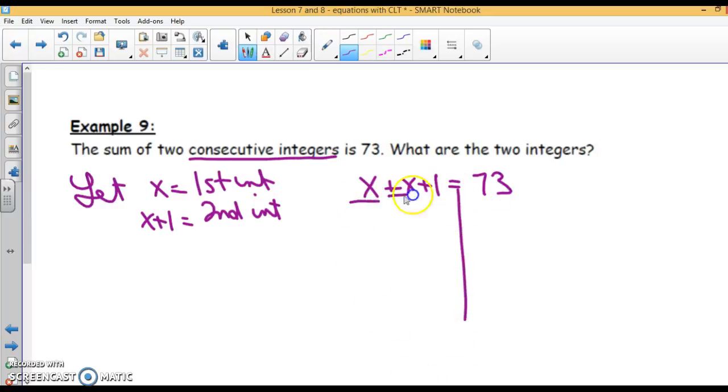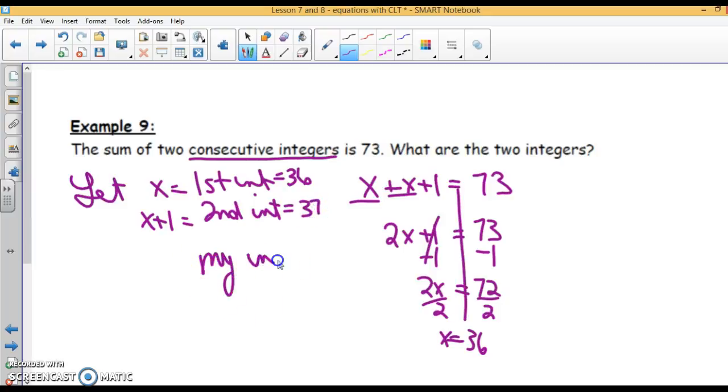It says the sum of x plus x plus 1 is 73. When I add x plus x, I get 2x. Bring down my plus 1 equals 73. Subtract 1, 2x is 72. Divide both sides by 2. x is 36. So my first integer is 36. 36 plus 1 is 37. So my integers are 36 and 37. And again, if you check that, if you add 36 plus 37, you will get 73. So we know we're right.